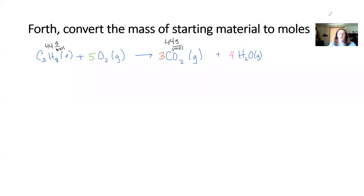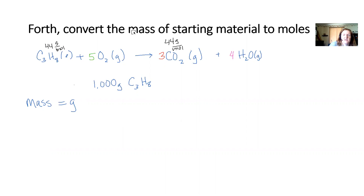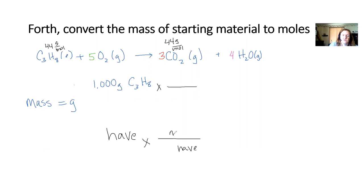Step four: convert the mass of the starting material into moles. We started with 1,000 grams of propane. Any time we go from mass to moles, we use the formula weight. For dimensional analysis, you start with what you have — grams — so you put grams on the bottom of your fraction to cancel it, and moles on top to get what you need.